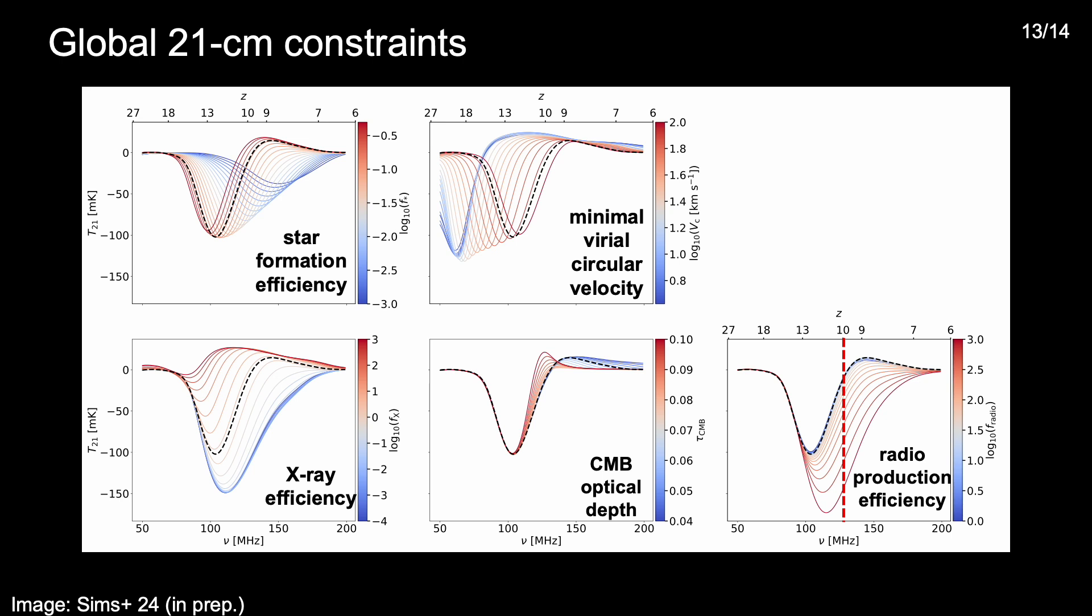In the last minute or two, I'll briefly return to the global 21cm signal. And overlaid on the signal, I'm now showing the 50 to 130 MHz observing band of the initial deployment of REACH, the radio experiment for the analysis of cosmic hydrogen. And the black dotted line shows a 25mK noise level, which is similar to the noise level in the publicly available EDGES2 data, and which, barring systematics, is also forecast to be achievable with a season of REACH data. And I show this just as an illustration that at this signal-to-noise level, a large fraction of signals in the prior volume are potentially detectable in this redshift range.